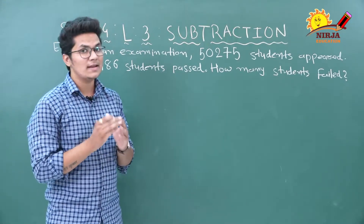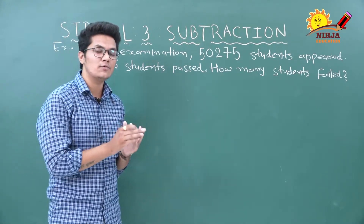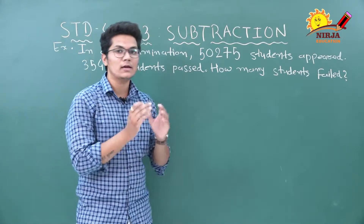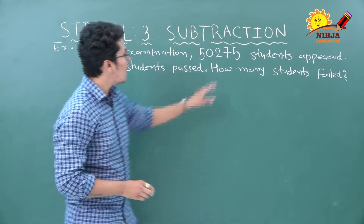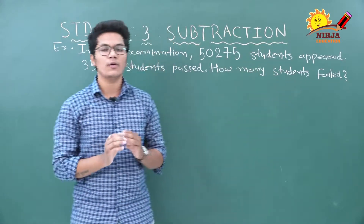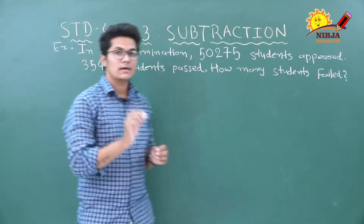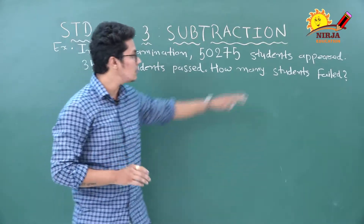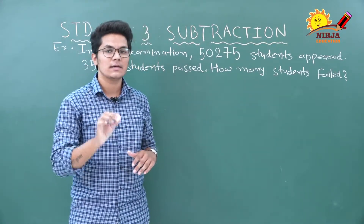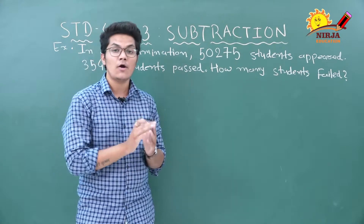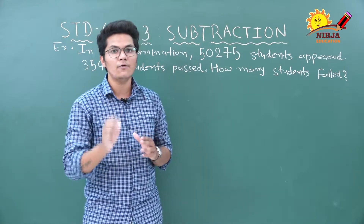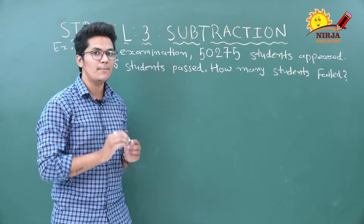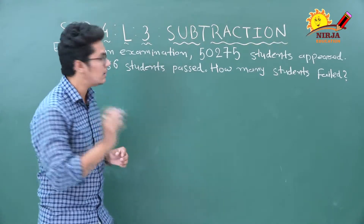First, find out what is the question. The question here is: how many students failed? That is our first step. Our second step is to write down all the information given in the word problem.